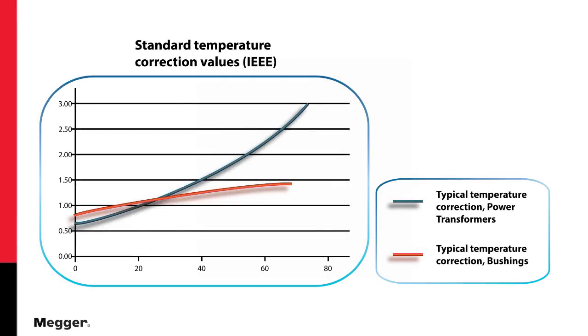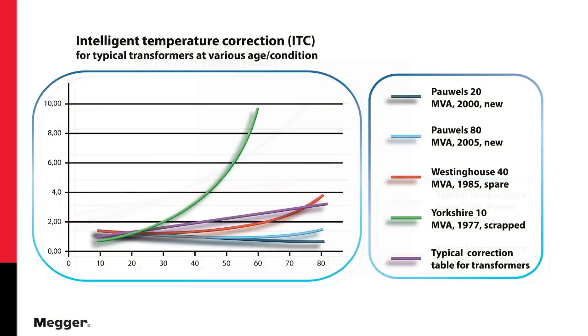Temperature correction graphs place all transformers and bushings into one or two categories, which is not accurate for many of our critical assets. As can be seen by this sample of actual temperature correction for various transformers, results can vary significantly.